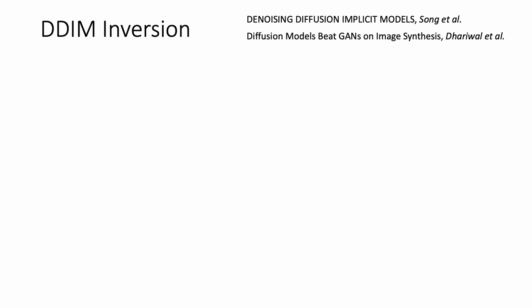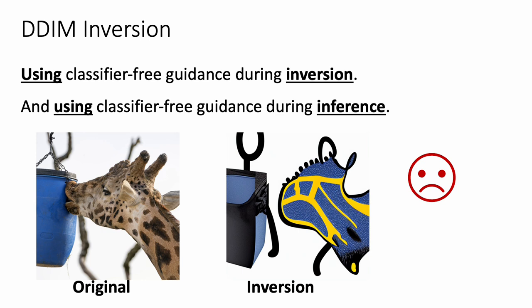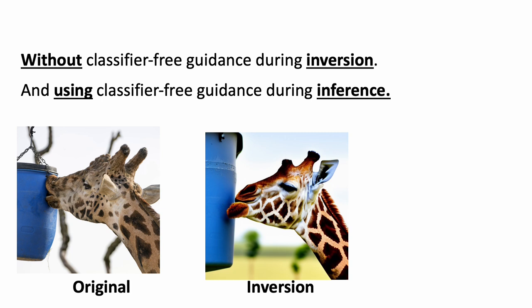But how can we get this noise? We first consider the direct DDIM inversion, so without classifier-free guidance. DDIM inversion reconstructs the image well but it is not editable, as the classifier-free guidance is essential for our editing. Using classifier-free guidance for both inversion and inference completely fails.